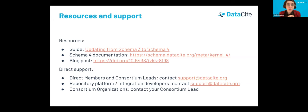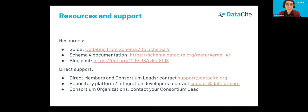During this transition year, the DataCite team is here to help with moving to schema 4 from schema 3. You can check out our support documentation, including the guide 'Updating from Schema 3 to Schema 4,' as well as the schema 4 documentation. You can contact us at support@datacite.org for assistance or with any questions. You can also reach out to your consortium lead if you are part of a consortium — consortium leads have been notified and are prepared to support with this.